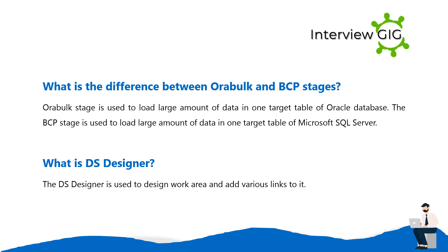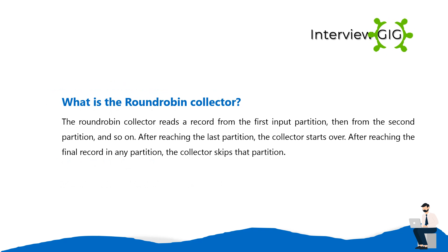What is DS Designer? DS Designer is used to design the work area and have various links to it. What is the Round Robin Collector? The Round Robin Collector reads a record from the first input partition, then from the second partition, and so on. After reaching the last partition, the collector starts over. After reaching the final record in any partition, the collector skips that partition.